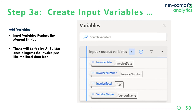Once I can see the recording has captured the required steps, I can create some variables that serve a couple of purposes. First, I want to add these to the desktop automation in place of the test values I supplied, and second, I'll connect these to AI Builder just like we did in the previous examples. In this case we have four variables: invoice date, invoice number, invoice total, and vendor name, corresponding to the legacy Access application form fields.